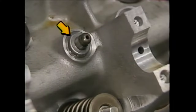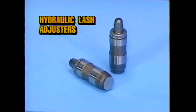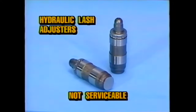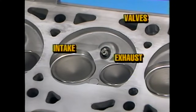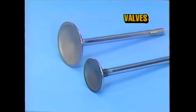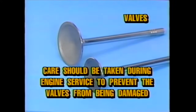Hydraulic lash adjusters are used to ensure constant cam follower to valve contact. They are similar to conventional hydraulic lifters and mount directly to the cylinder head. Note: hydraulic lash adjusters cannot be serviced and must be replaced. A two valve per cylinder configuration is used on the 4.6 liter engine. A large intake valve and a small exhaust valve allow for better volumetric efficiency. The valves are designed with a thin seat area for reduced weight, and care should be taken during engine service to prevent the valves from being damaged.